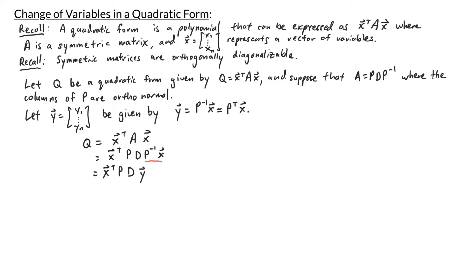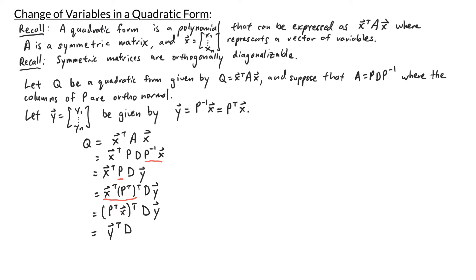Now we can make another change. The matrix P here can be rewritten as P transpose transpose, because when I transpose a matrix twice I get back the original matrix. So I can write this as x transpose times P transpose transpose times the diagonal matrix D times y. Grouping the two transpose terms together, we have P transpose x, transposed, times D times y. Now remember that P transpose x is also y, so this becomes y transpose D times y.